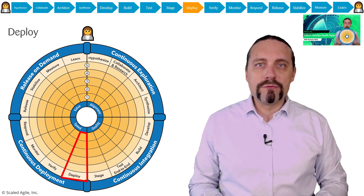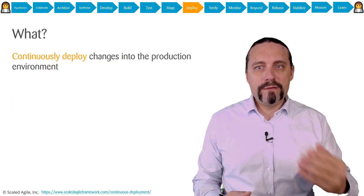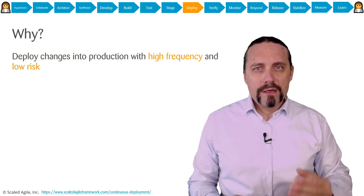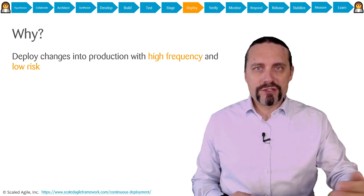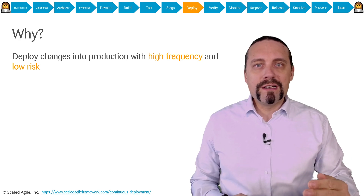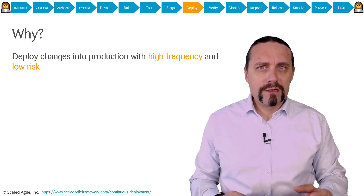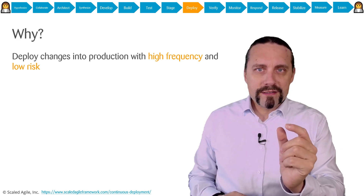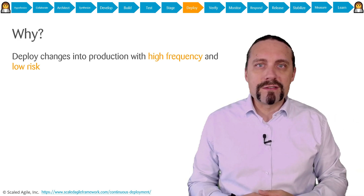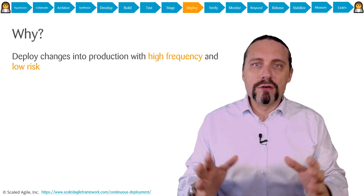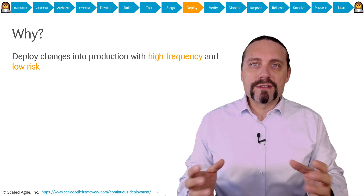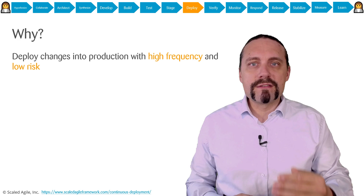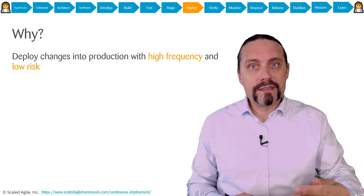Now let's look at what we do in the deploy step. In the deploy step we want to continuously deploy our changes into the production environment. We do this because continuously deploying small changes has a low risk and high frequency. Small changes have a lower risk of failing in production, whereas changes accumulated over three months are much bigger and have a much higher risk. So we want to continuously deploy with high frequency and low risk into the production system.